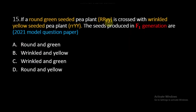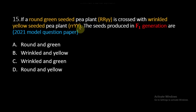Question number 15: If a round green seeded pea plant (capital R capital R small y small y) is crossed with a wrinkled yellow seeded pea plant (small r small r capital Y capital Y), what are the seeds produced in the F1 generation?